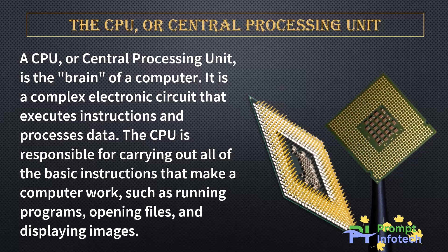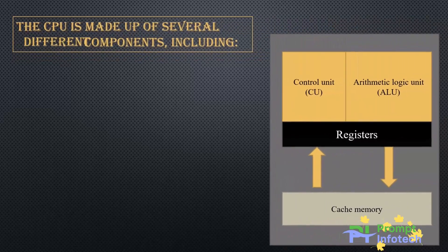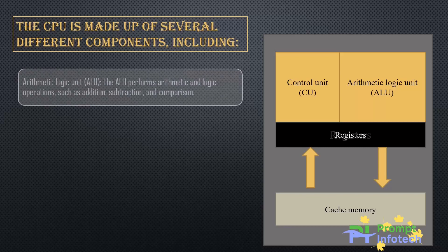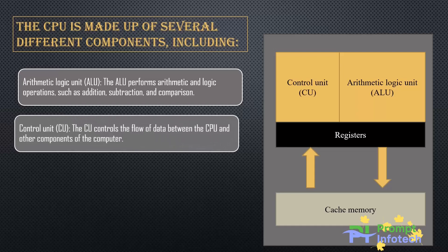The CPU is made up of several different components. The Arithmetic Logic Unit, or ALU, performs arithmetic and logic operations such as addition, subtraction, and comparison. The Control Unit, or CU, controls the flow of data between the CPU and other components of the computer.